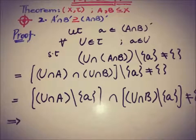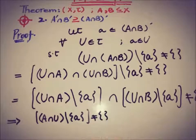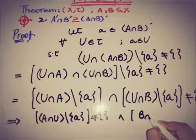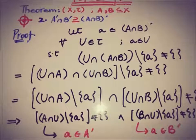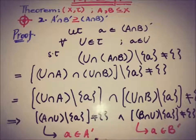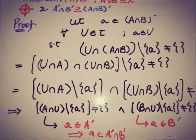So we can write that U ∩ A \ {a} ≠ ∅ and U ∩ B \ {a} ≠ ∅. This implies that a belongs to the accumulation set A' and a also belongs to the accumulation set B'. Therefore a is a member of A' ∩ B'.